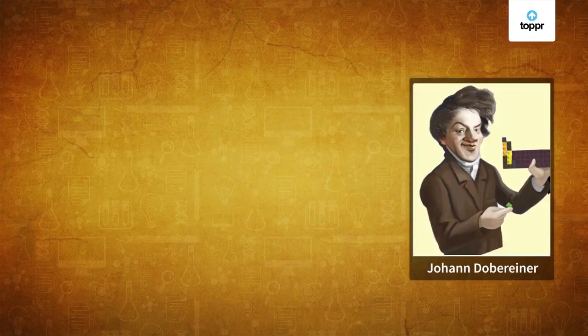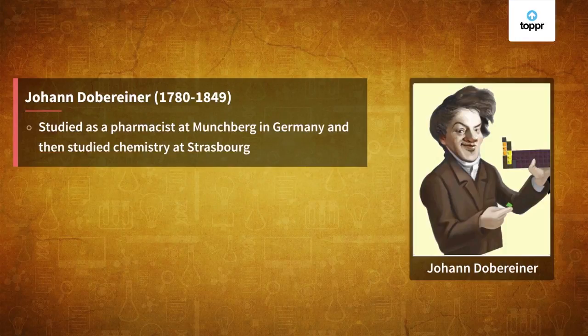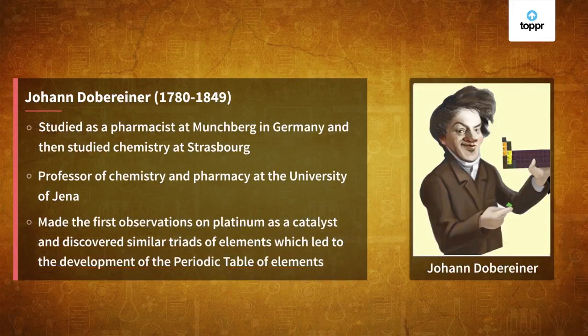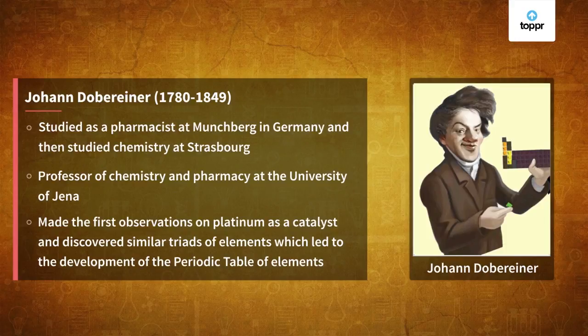In this race, the first one to classify elements was Johan Döbereiner. He studied as a pharmacist in Germany at Munchburg, and then he studied chemistry at Strasbourg. After some years, he became a professor of chemistry and pharmacy at the University of Jena. He was the first to find out that platinum can be used as a catalyst, and also the first to classify elements, finding similar tribes of elements that led to the development of the periodic table.